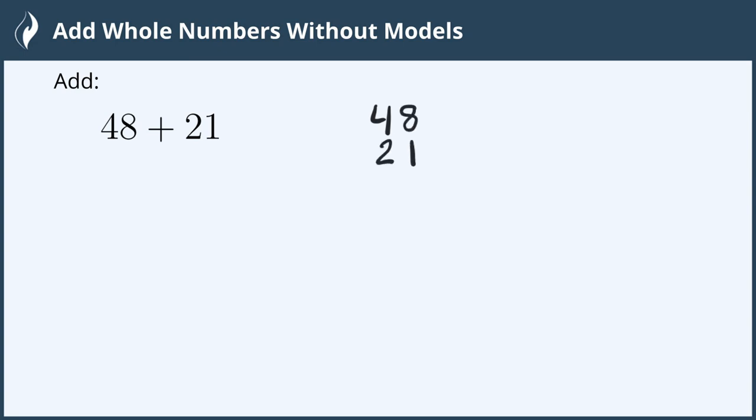So I'm going to add 48 to 21. That shows me that I have the ones lined up — 8 and 1 — and adding those together gives me 9.